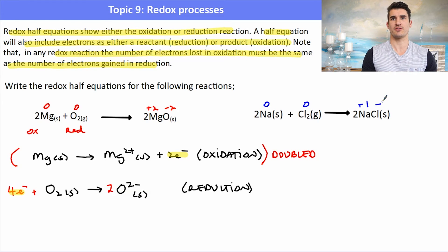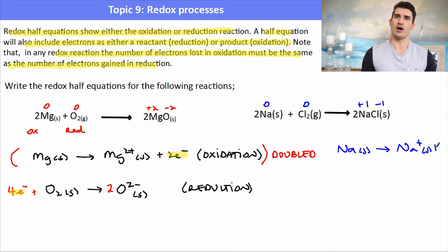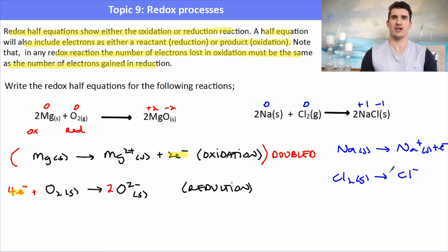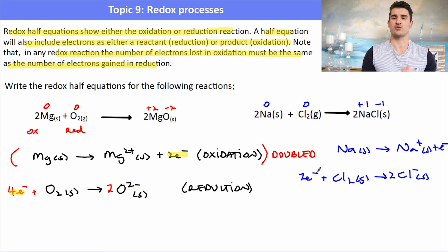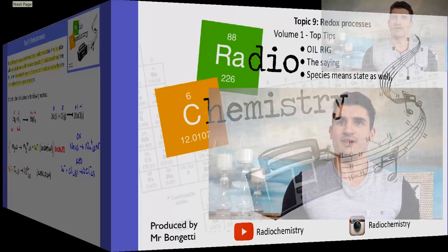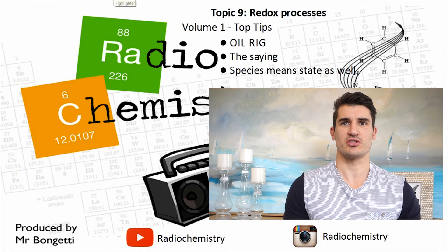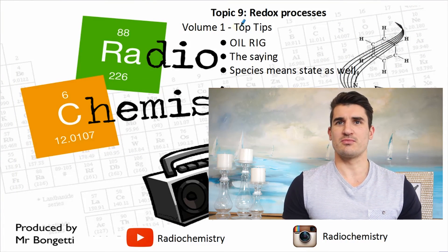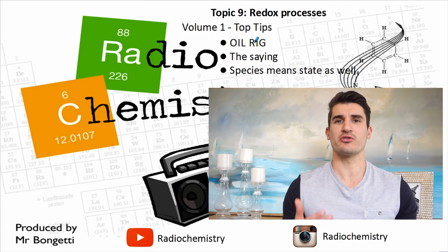For sodium and chlorine: both are elements with oxidation state zero. Na goes from 0 to +1 — oxidation half equation: Na → Na⁺ + e⁻. Cl₂ goes from 0 to −1 — reduction half equation: Cl₂ + 2e⁻ → 2Cl⁻. Note that stoichiometric coefficients are not considered when assigning oxidation numbers.